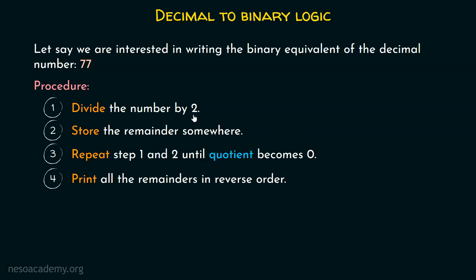We first have to divide the number by 2 because we want to convert this number to a binary number — binary means base 2. Store the remainder somewhere, because that remainder represents a bit of this particular number. After this, we must repeat steps 1 and 2 again and again until quotient becomes 0, and then print all the remainders in reverse order.